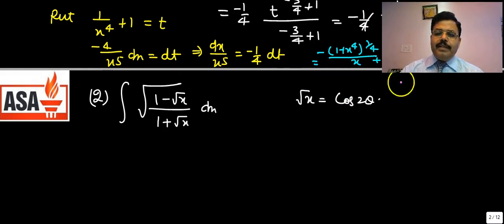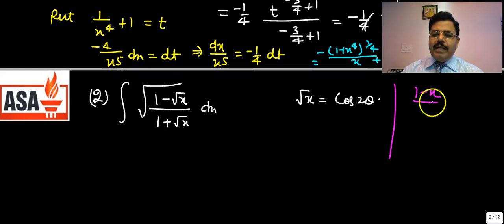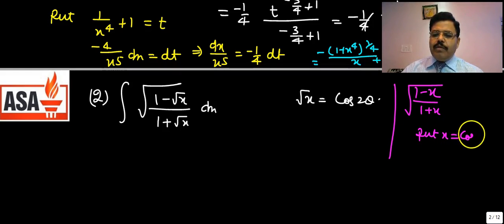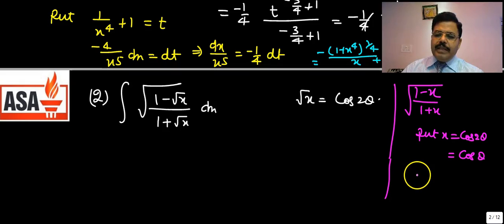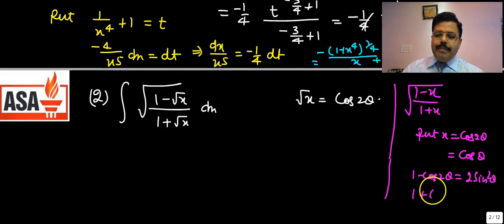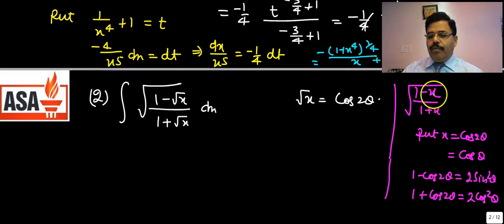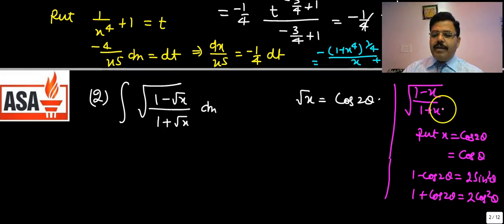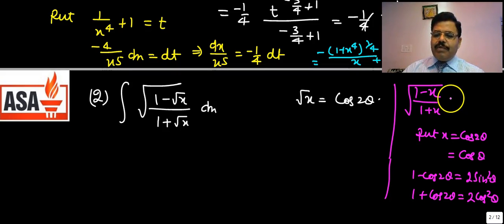Why this substitution? Because if there is (1−x)/(1+x) under a square root, the proper substitution is x = cos 2θ or x = cos θ. We know 1 − cos 2θ = 2sin²θ and 1 + cos 2θ = 2cos²θ. So the ratio simplifies to sin²θ/cos²θ = tan²θ, which comes out as tan θ.